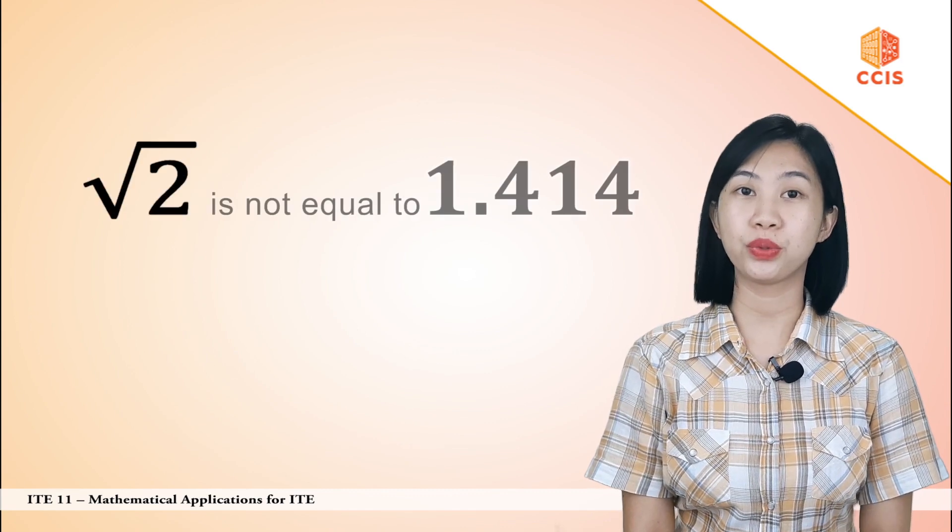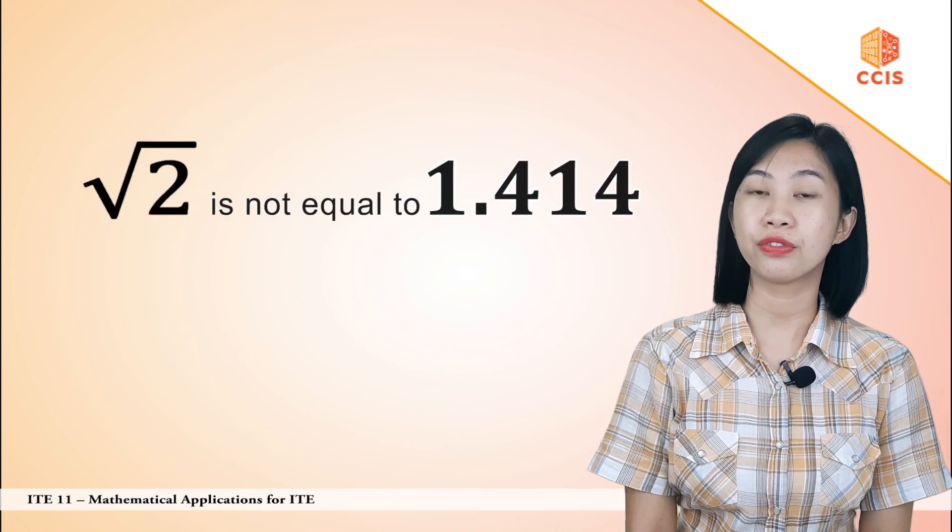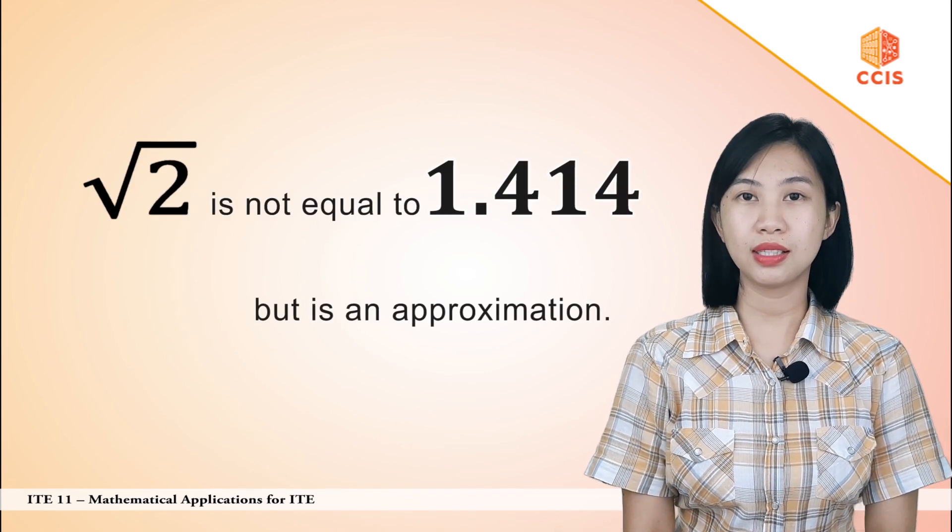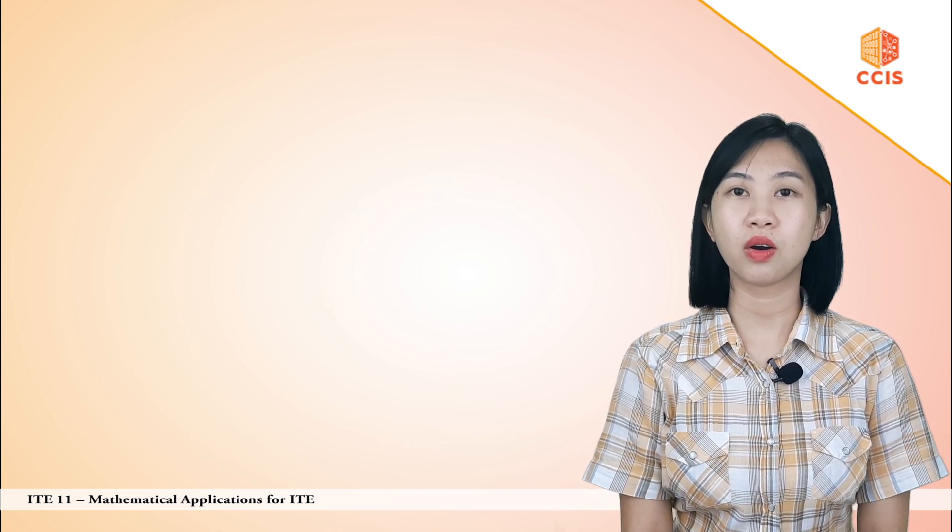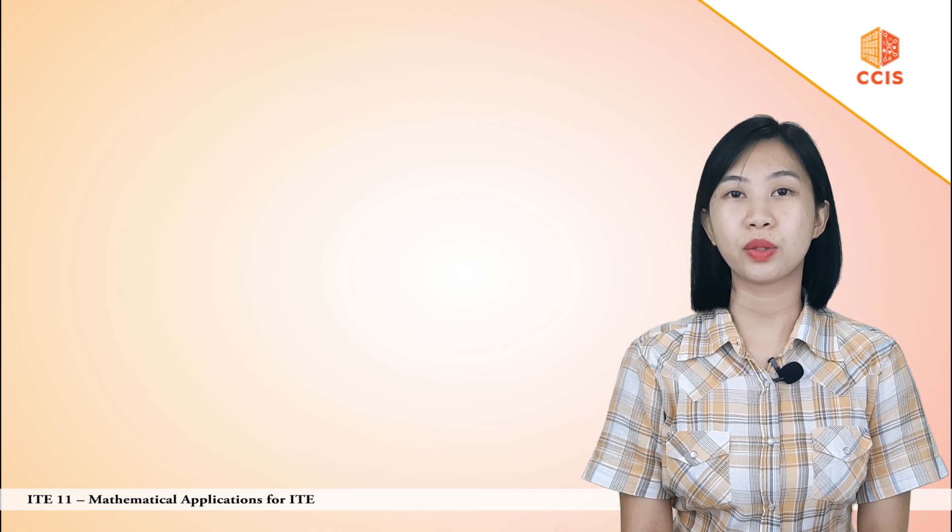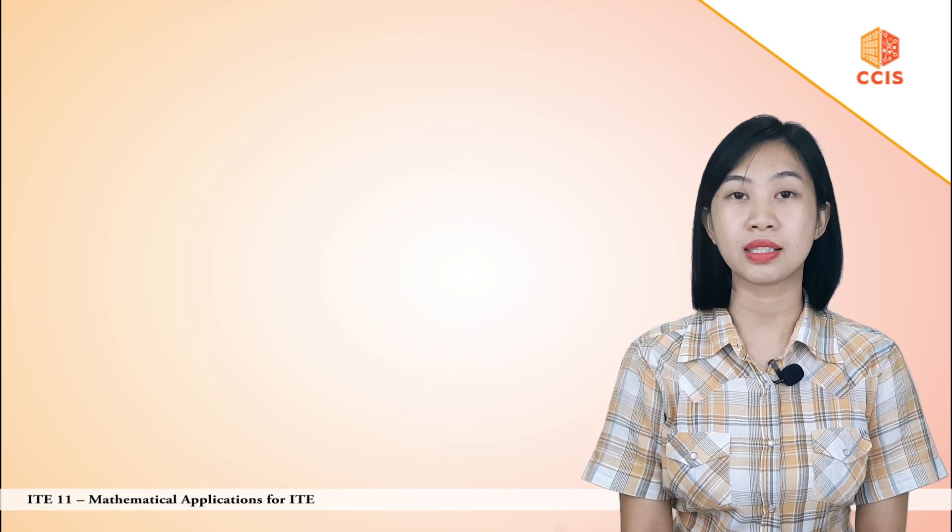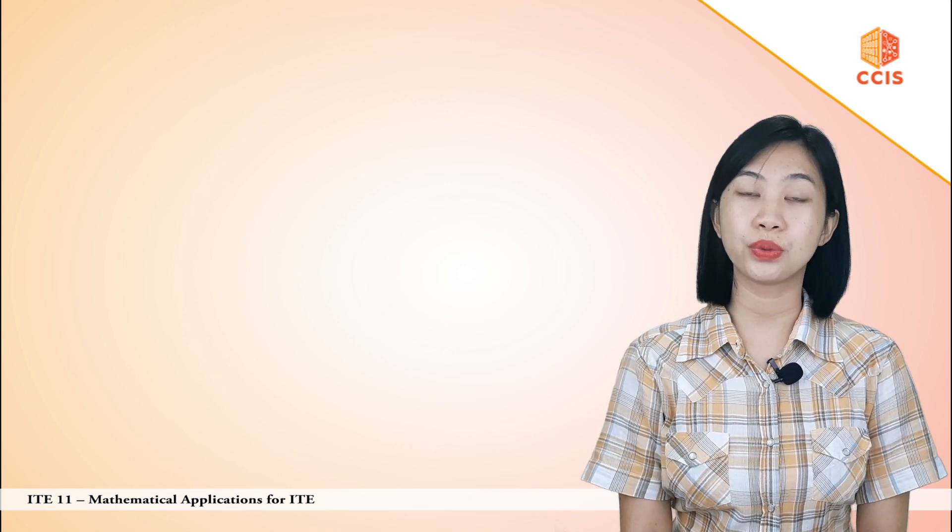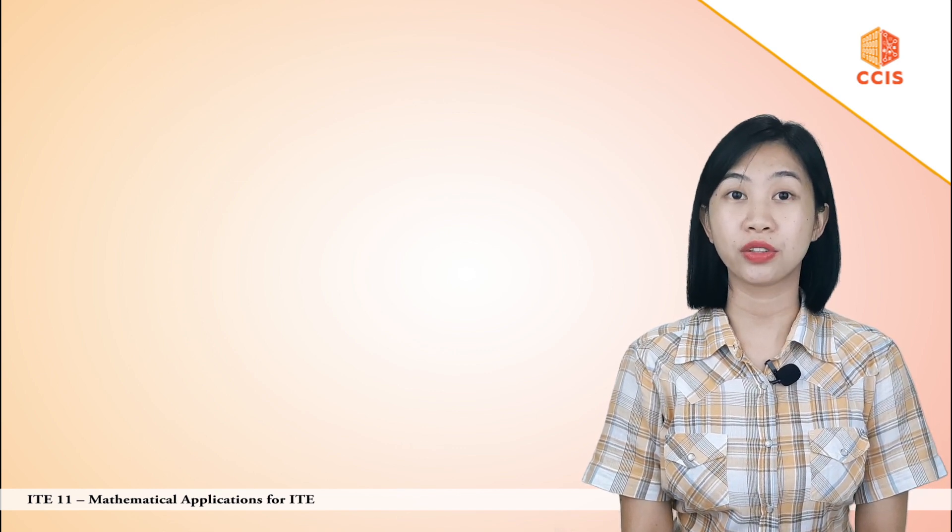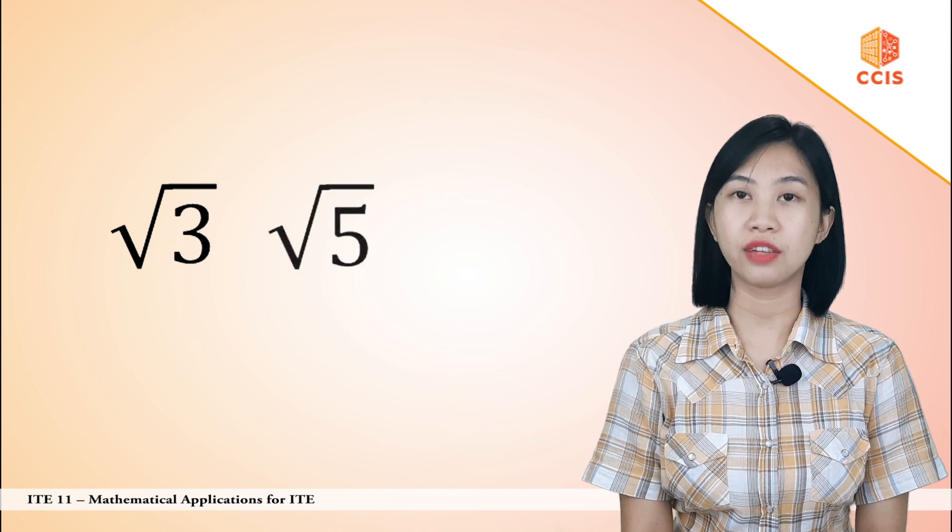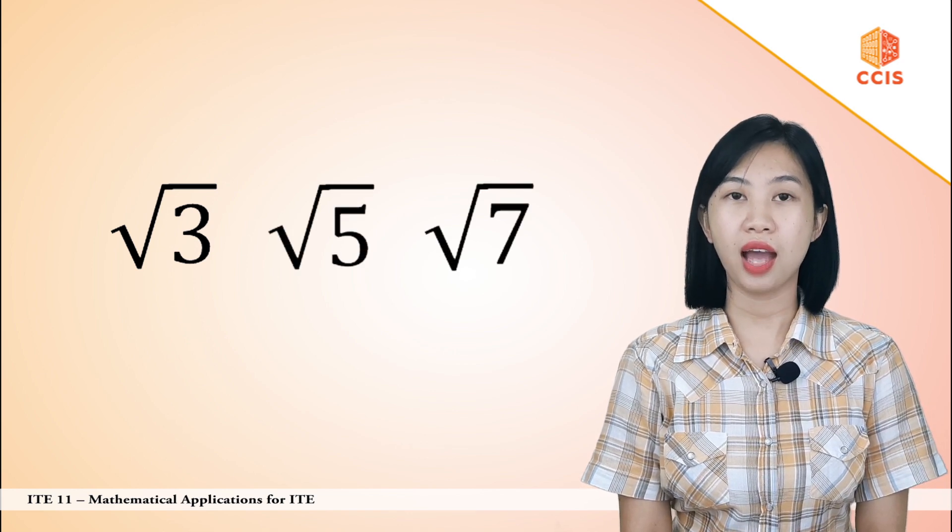Thus, square root of 2 is not equal to 1.414, but is an approximation. There's no terminating or repeating decimal that will give exactly 2 when multiplied by itself. So square root of 2 is an example of an irrational number, as well as the square root of 3, square root of 5, square root of 7, and many more.